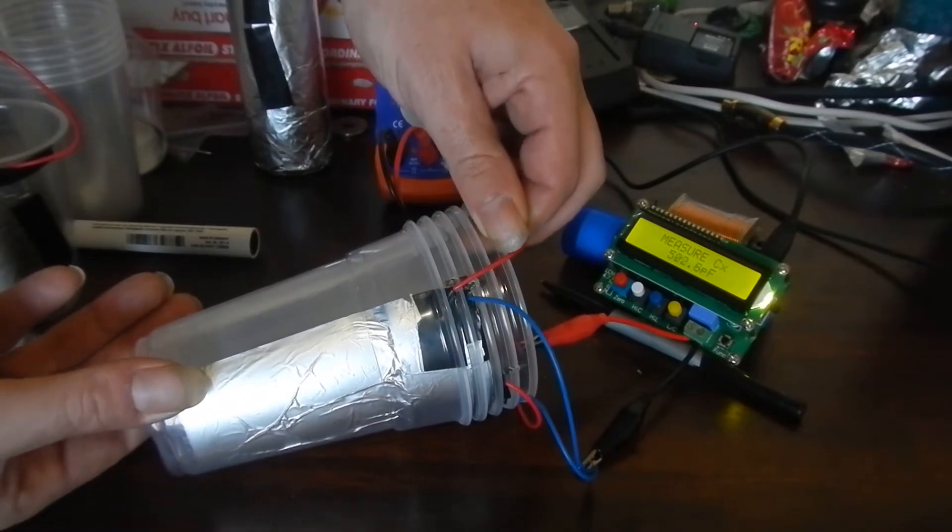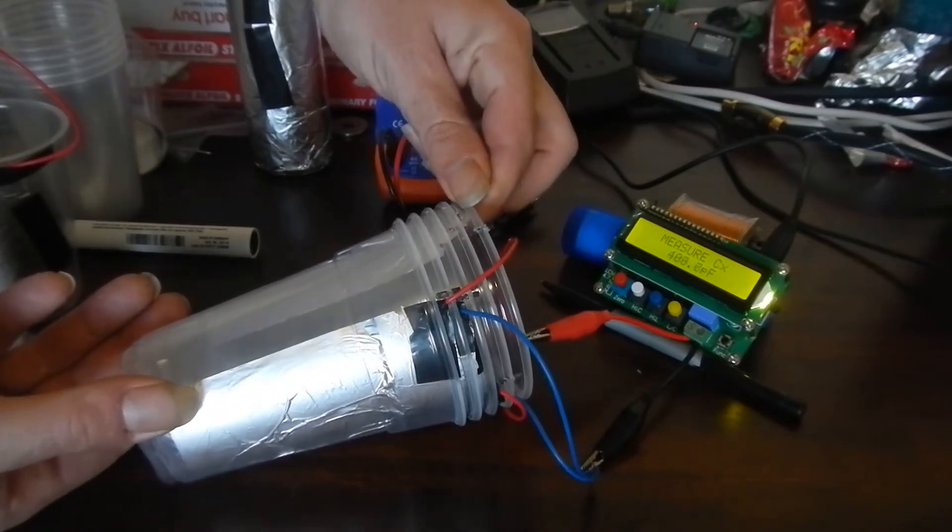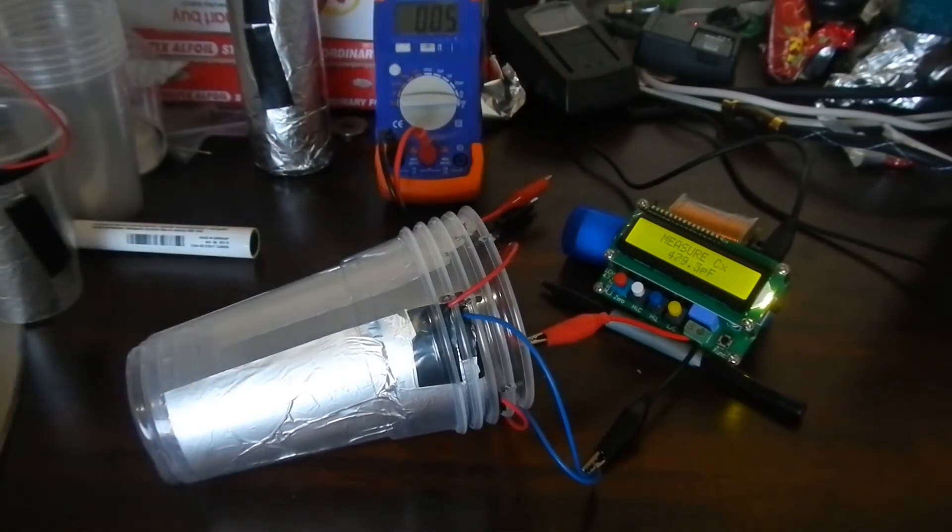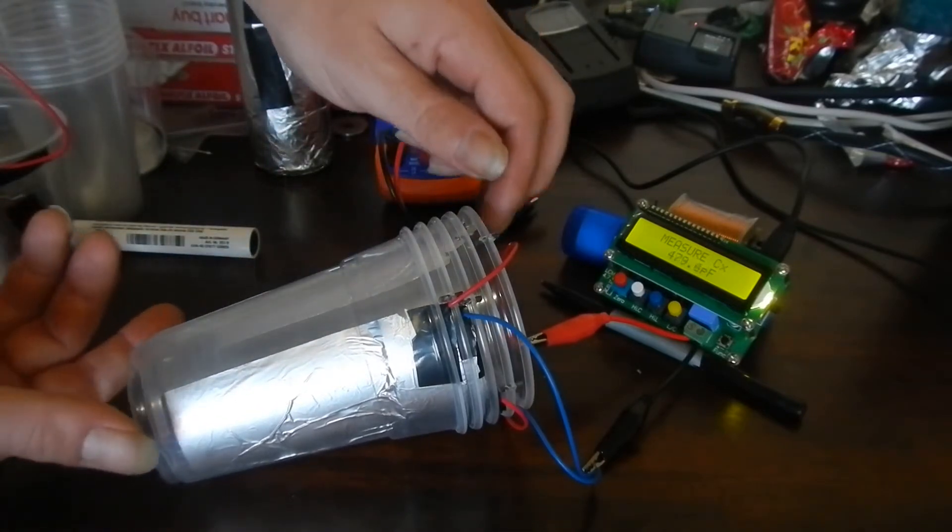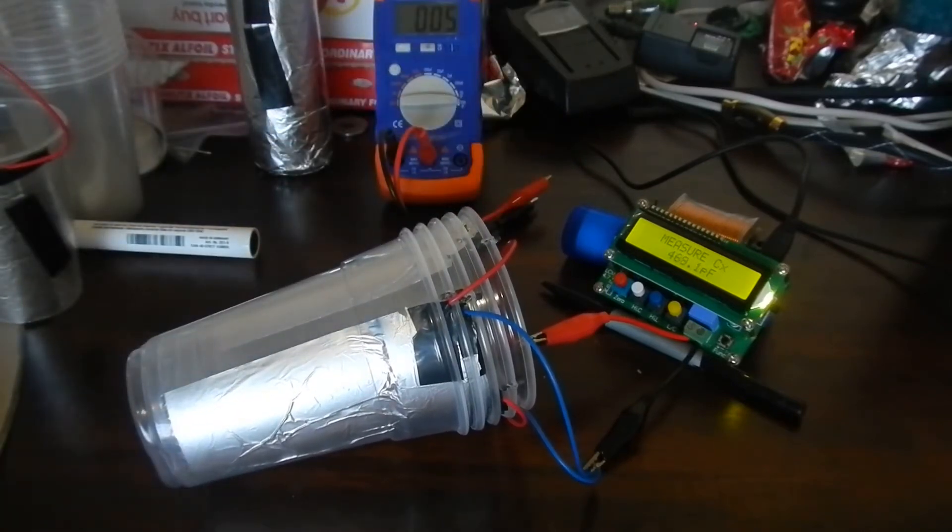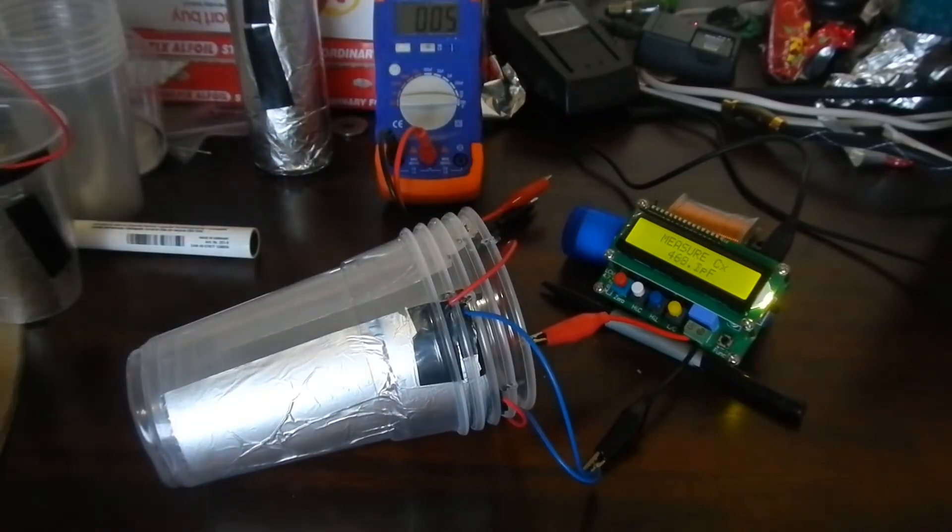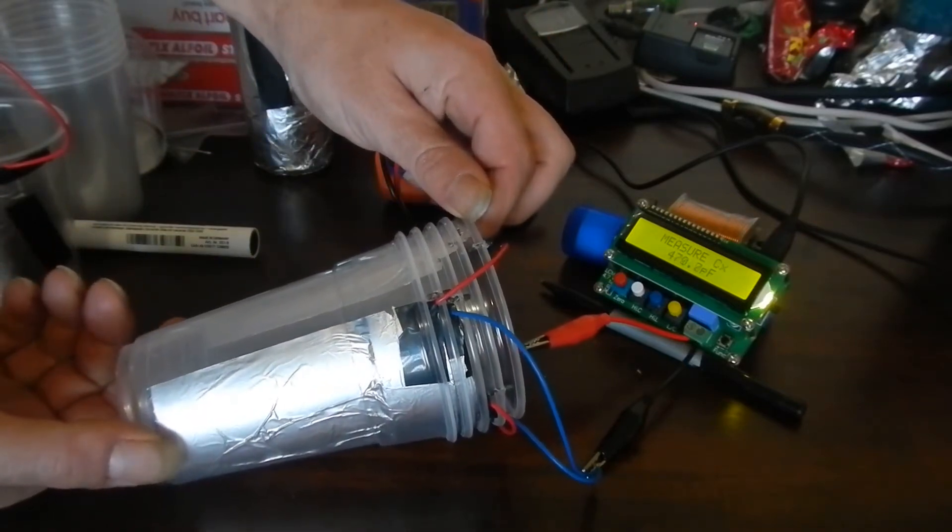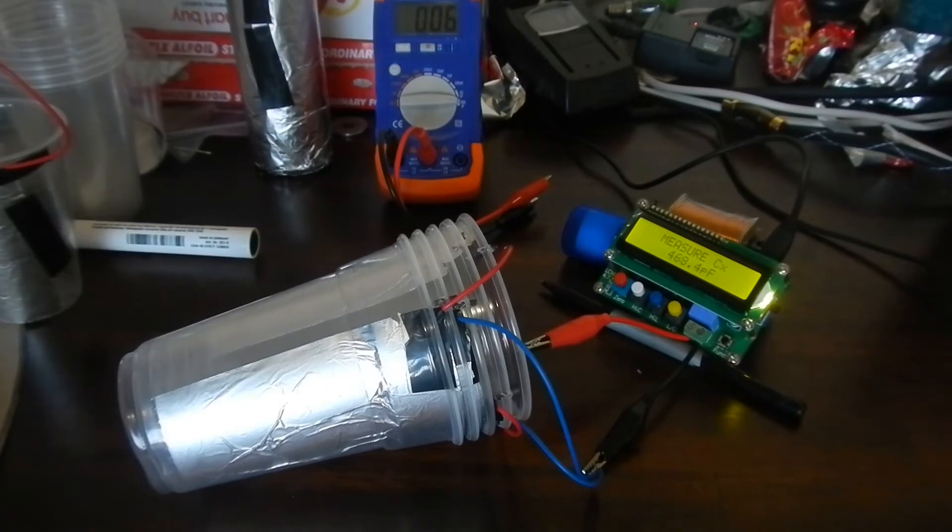But I think if you're watching that meter go down, you'll agree that I can get some very small adjustments. Let's see, I've got 479.2, 468.1. I can do a smaller movement than that. There we go, 468.4.